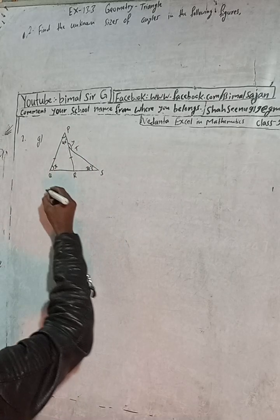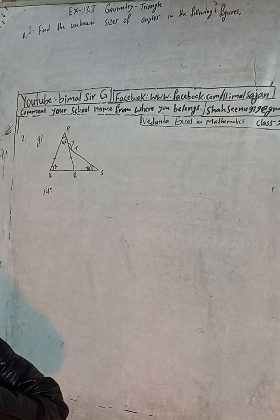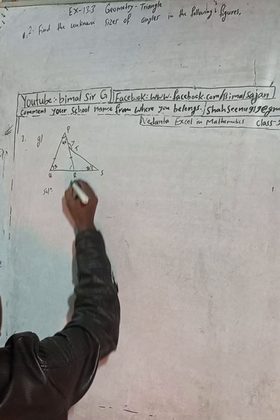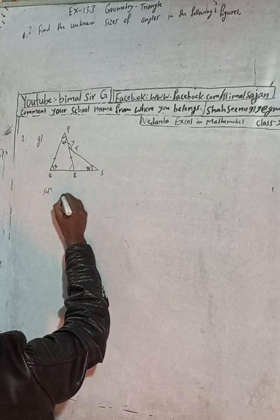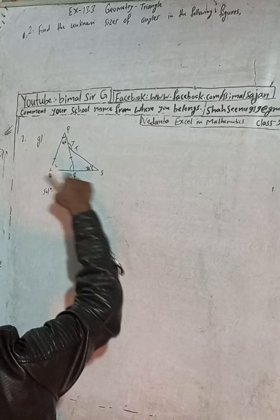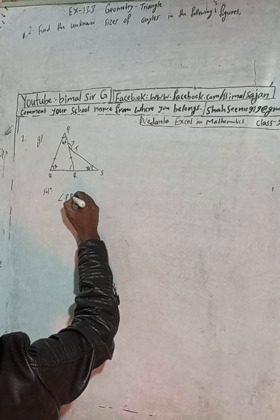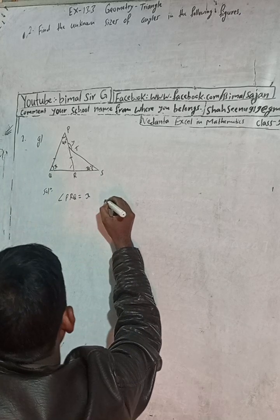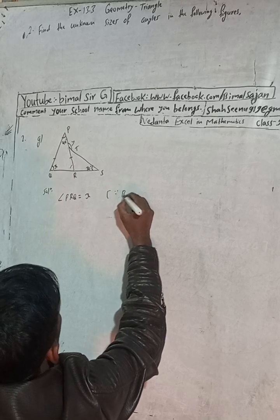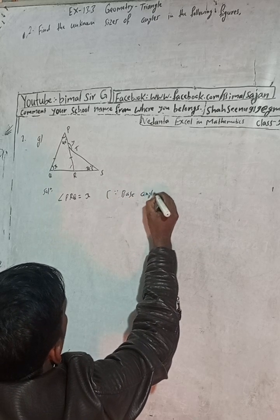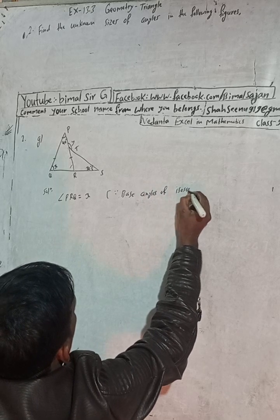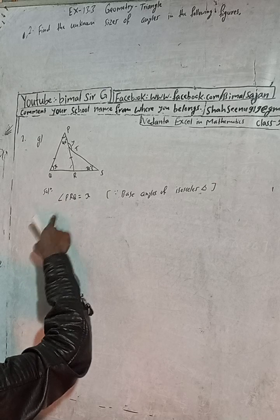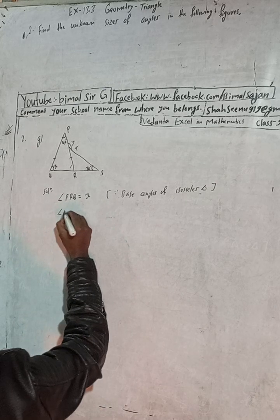So in the solution, this angle is equal to this angle. I will name it angle PQR — sorry, angle PRQ. Angle PQR is equal to angle PRQ because the base angles of an isosceles triangle are equal.